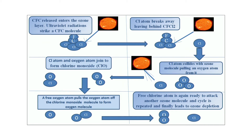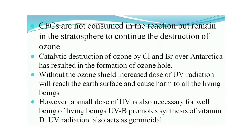The free chlorine atom collides with an ozone molecule, pulling an oxygen atom from it. Chlorine and oxygen join to form chlorine monoxide. A free oxygen atom then pulls the oxygen atom from the chlorine monoxide molecule to form an oxygen molecule, and the free chlorine atom is again ready to attack another ozone molecule. The cycle repeats, leading to ozone depletion. CFCs are not consumed in the reaction but remain in the stratosphere to continue destroying ozone.